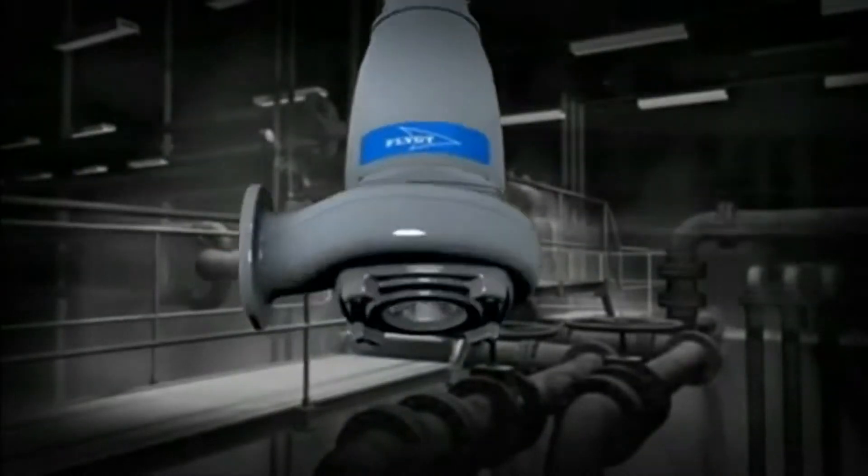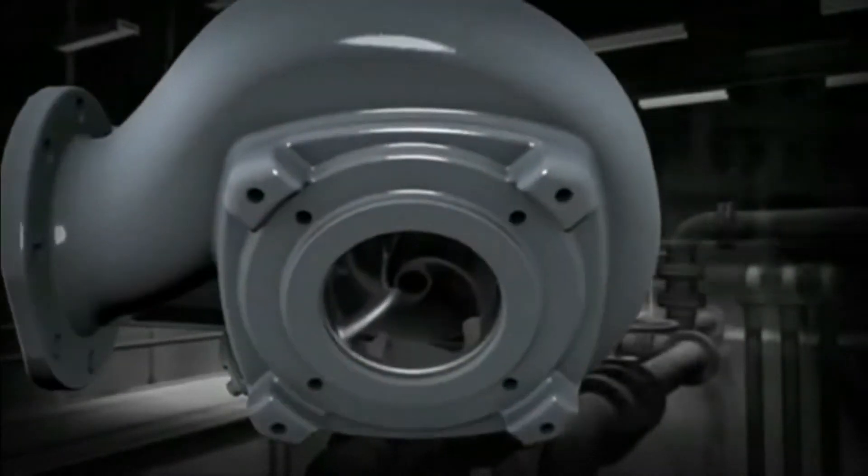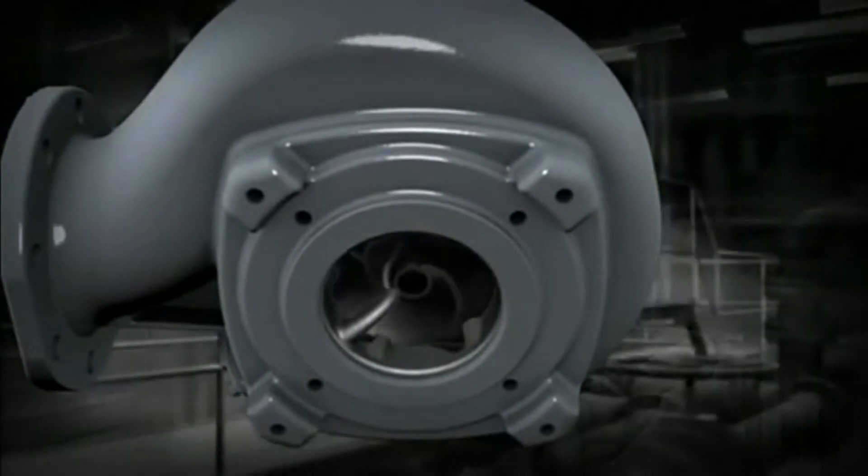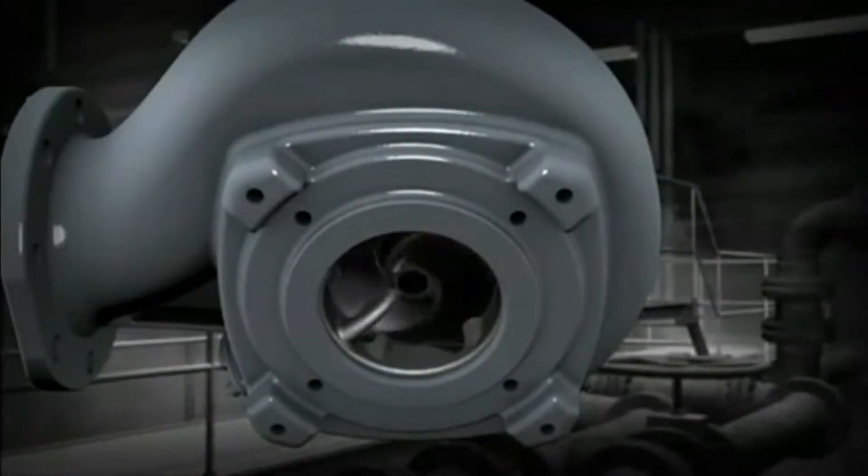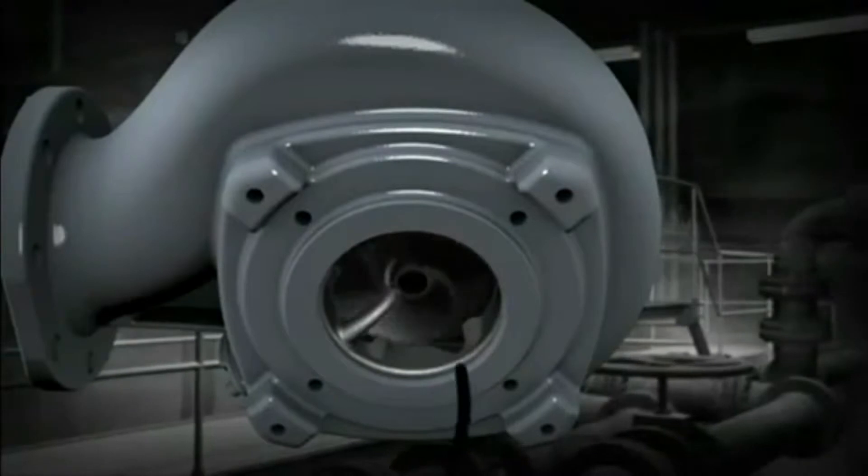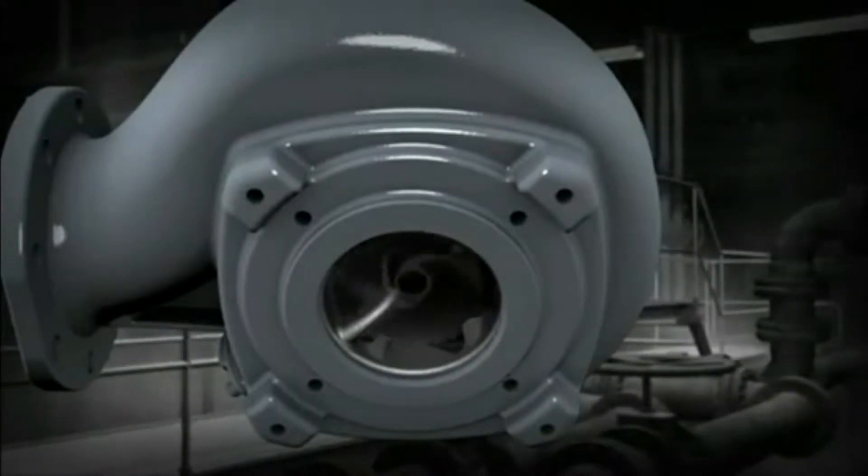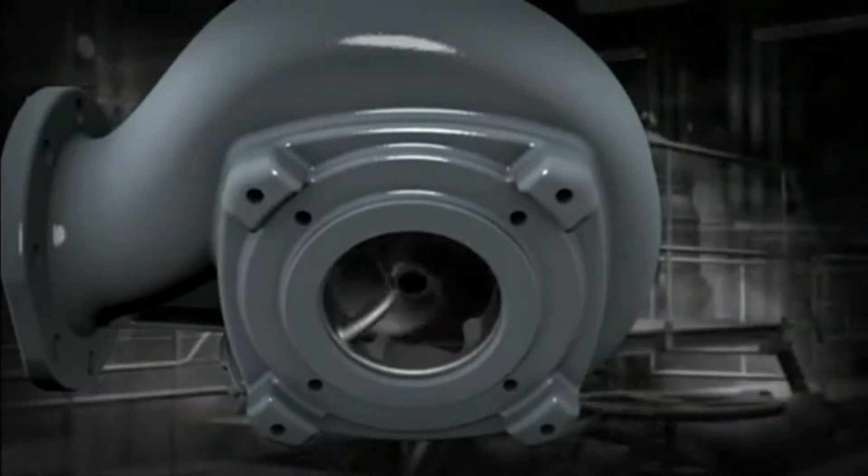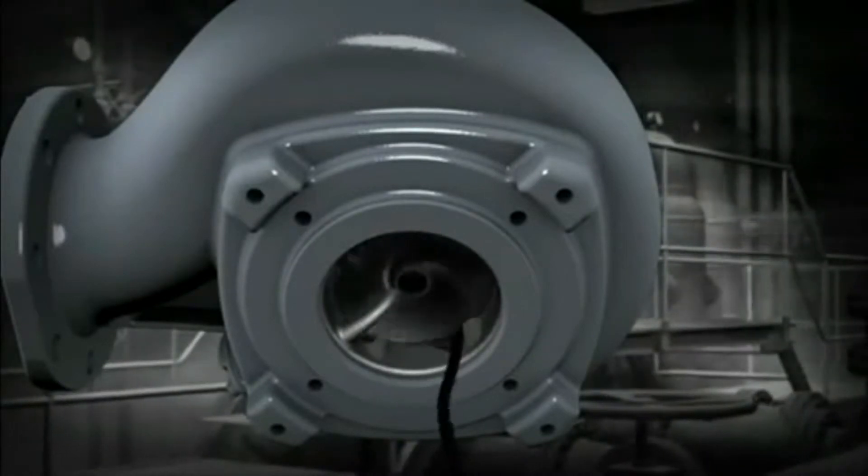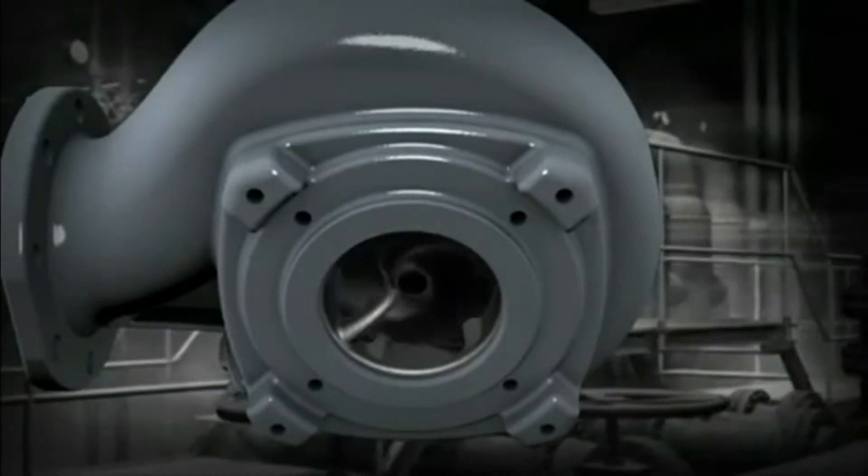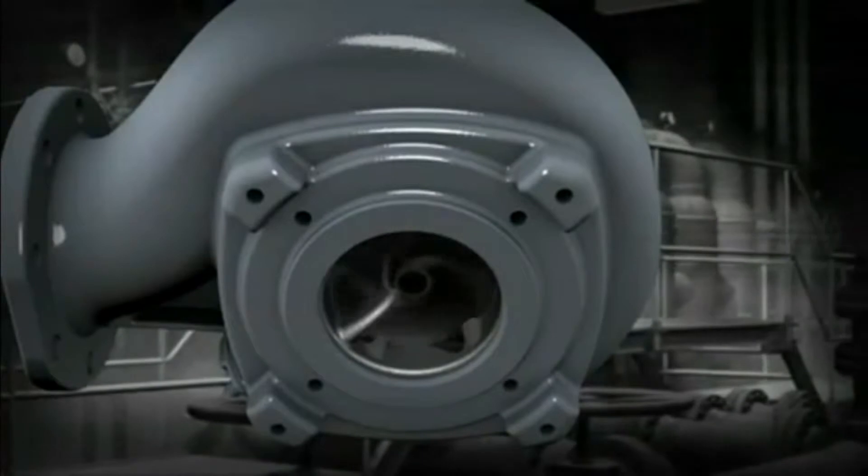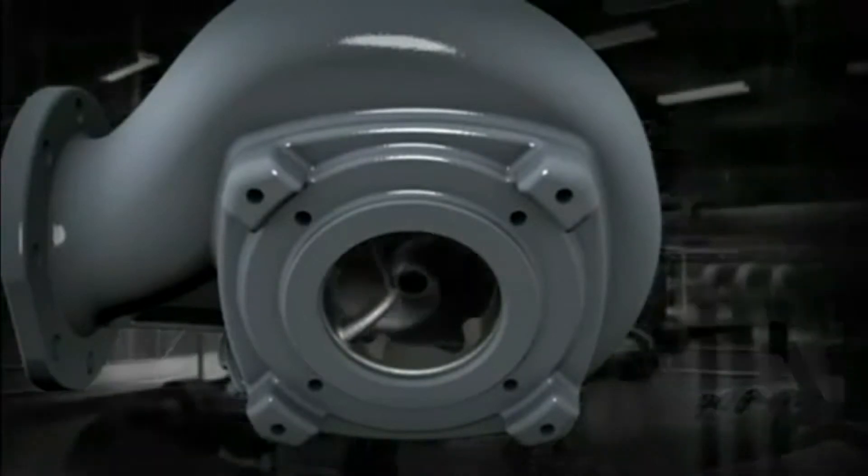Fibrous waste can jam impellers and put pumps out of commission. To challenge this, the heavy-duty flight chopper pumps are equipped with a powerful impeller that rotates inside a cutting plate. Fibrous waste and debris passing through the impeller are effortlessly chopped into small pieces that are easy to pump.